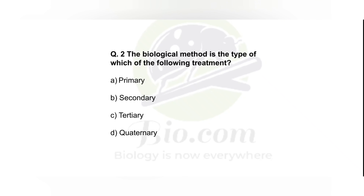Now let's solve another question: biological treatment is a type of which of the following treatments? As we all know, for proper waste treatment, three approaches are used: primary treatment, secondary treatment, and tertiary treatment. In primary treatment, methods include sedimentation, screening, penetration method, and equalization for the removal of large solid particles. In primary treatment, larger particles are easily removed. Secondary treatment is biological treatment.